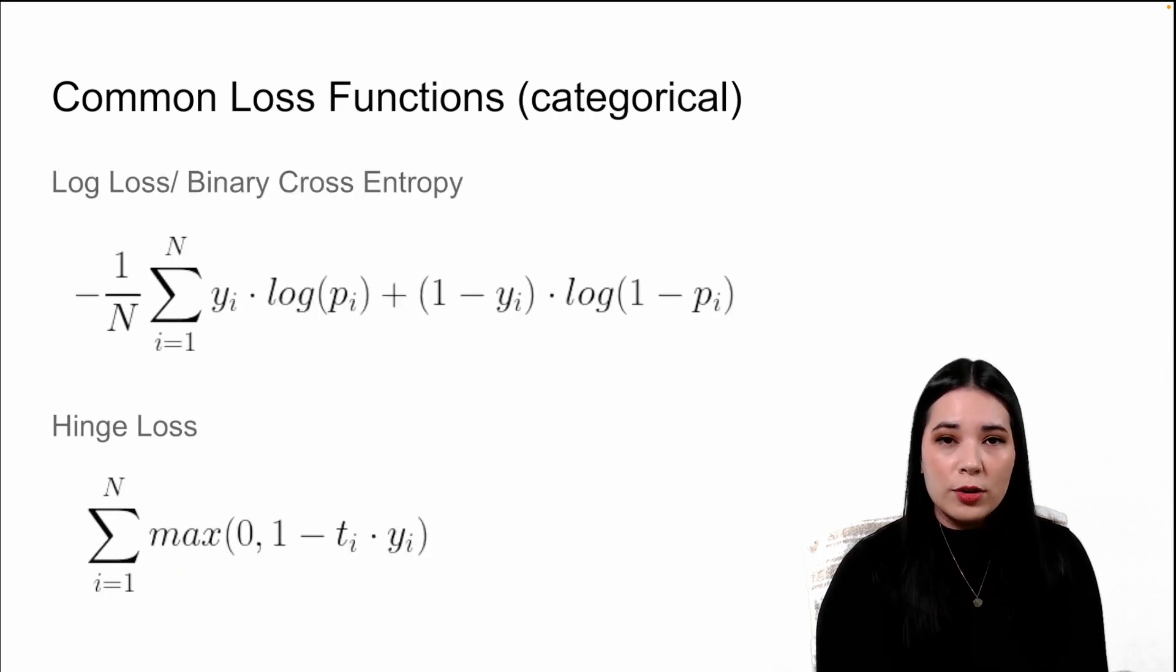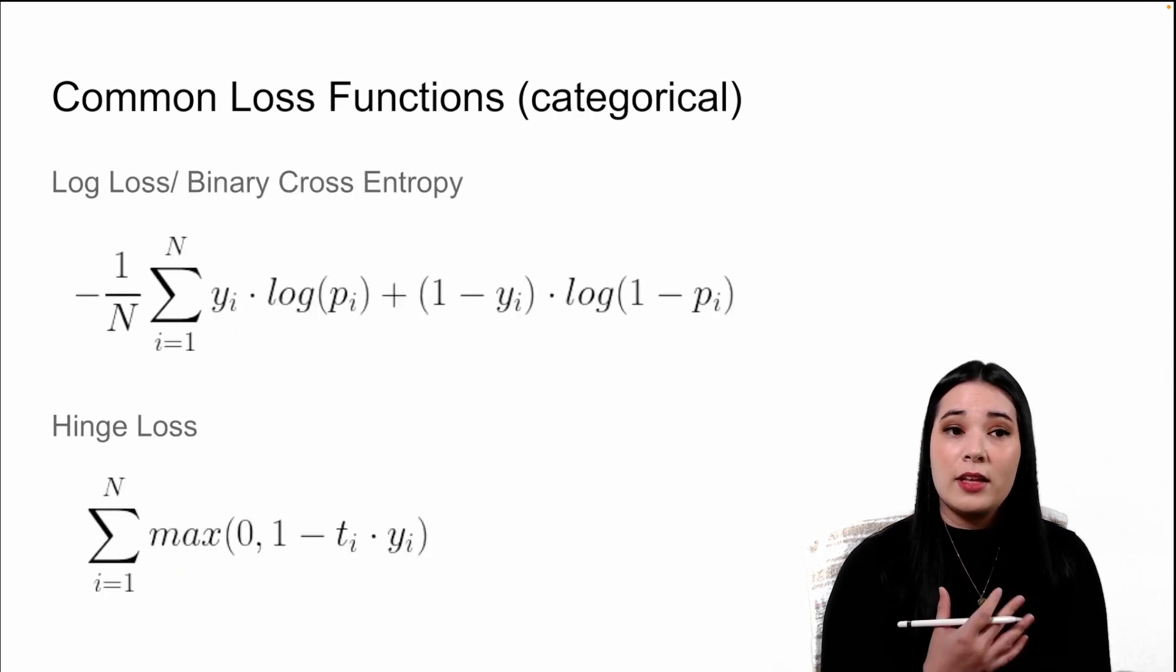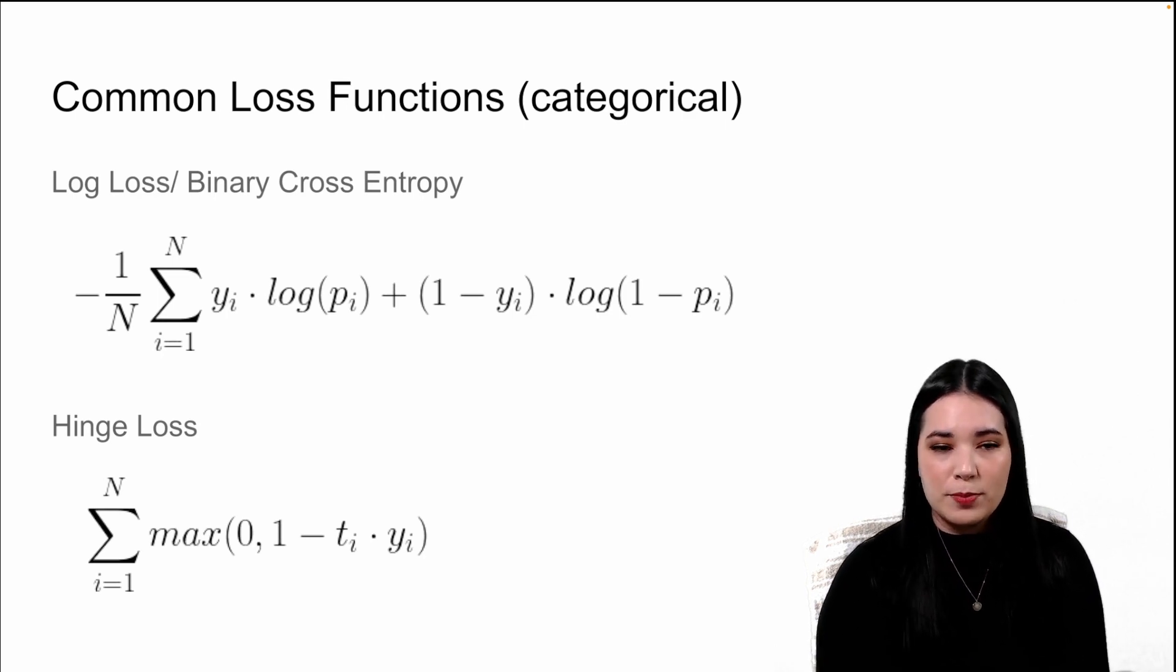If we're predicting a categorical variable, you might use something like log loss, which is also called binary cross entropy. Log loss measures how our prediction matches up with the actual value. For instance, if we have a data point that is in category one, and we predict that there's a 90% probability that that data point is in category one, that's really a great prediction. However, if our data point is in category zero, and we predict that there's a 90% chance it's in category one, that's a really bad prediction. This is what log loss or binary cross entropy measures.